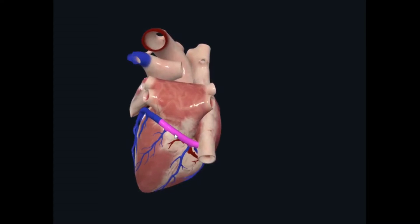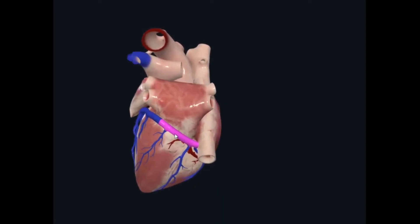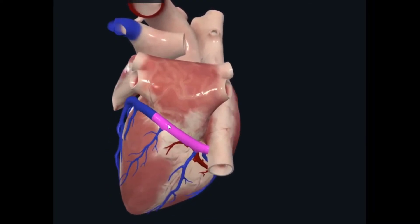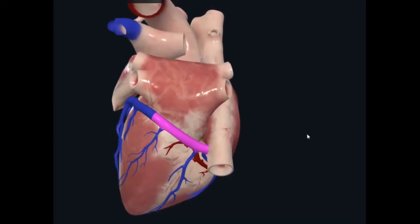Now this coronary sinus is the largest vein of the heart, meaning that it drains all the venous blood of the heart. As every organ has arterial supply and venous drainage, all the veins of the heart open into this great vein known as the coronary sinus. Ultimately, this coronary sinus opens into the right chamber, that is your right atrium.